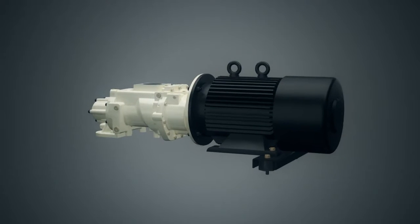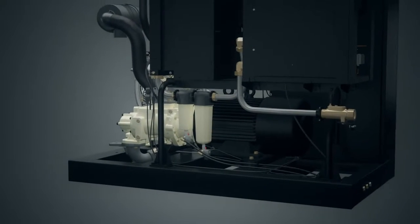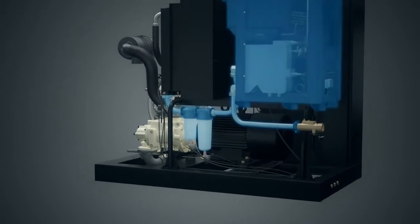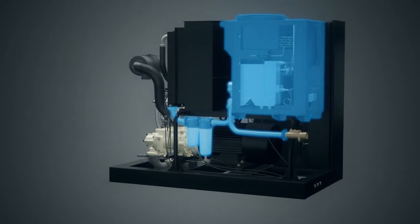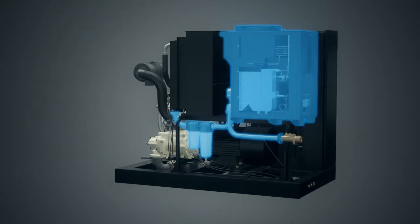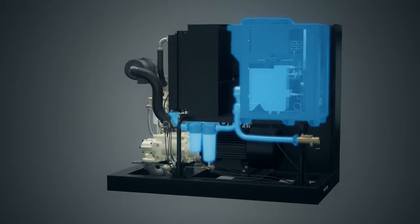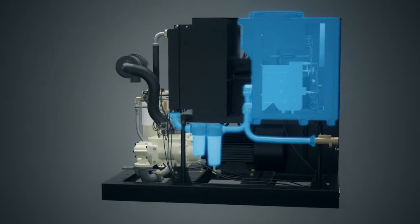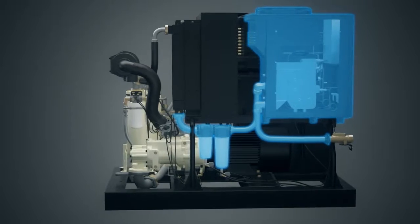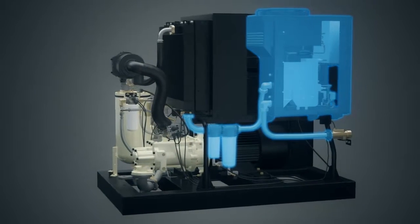To further lower costs and minimize critical floor space needs, take advantage of the next generation R-series compressors total air system configuration. This includes an integrated refrigerated dryer, heat exchanger, and coalescing filter to provide clean, dry air in a single package with the smallest footprint.